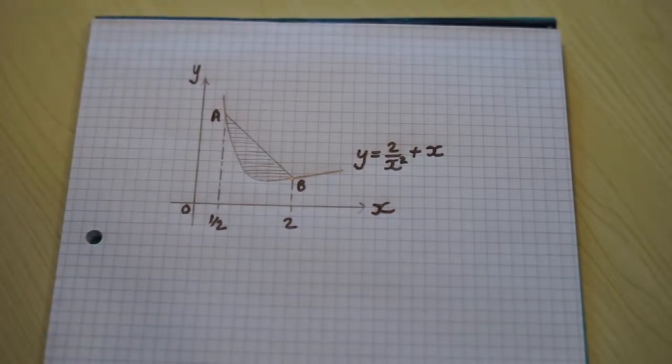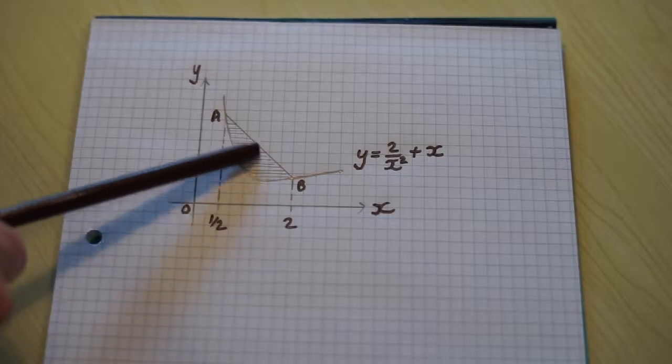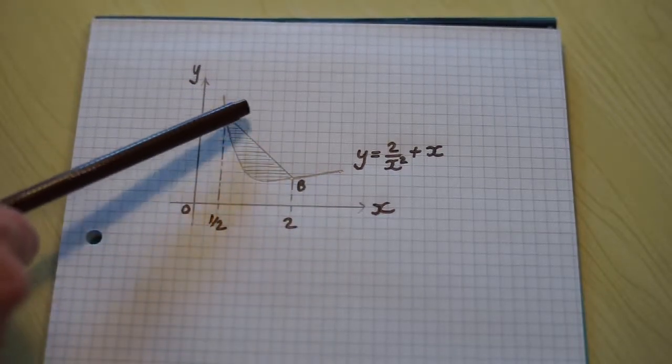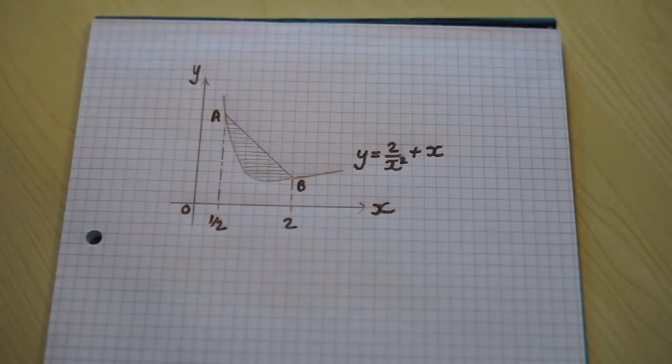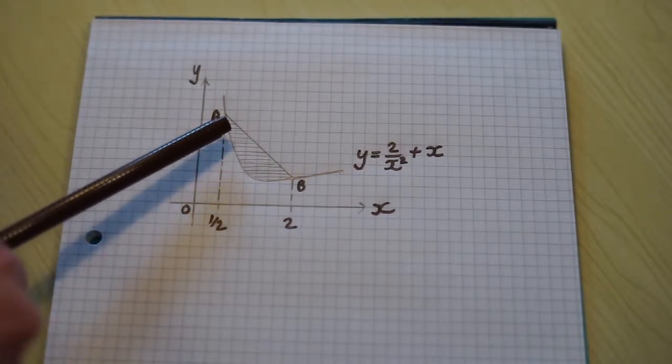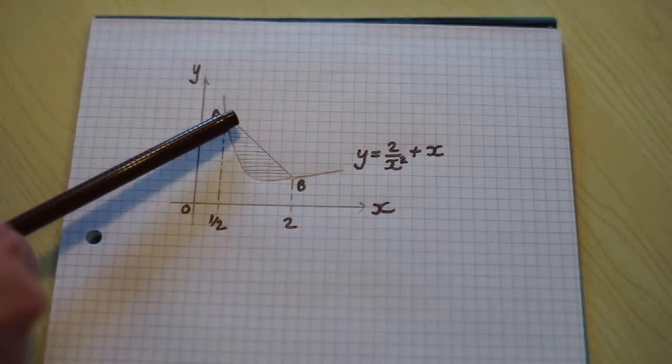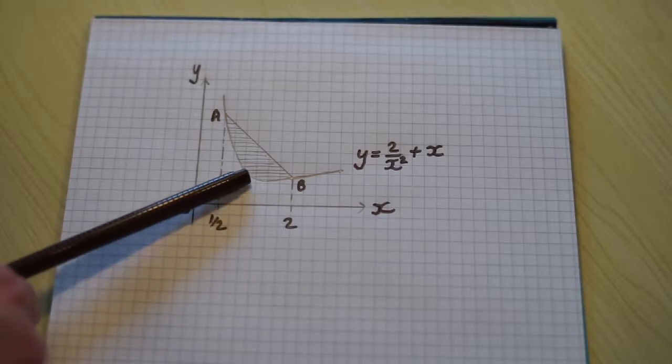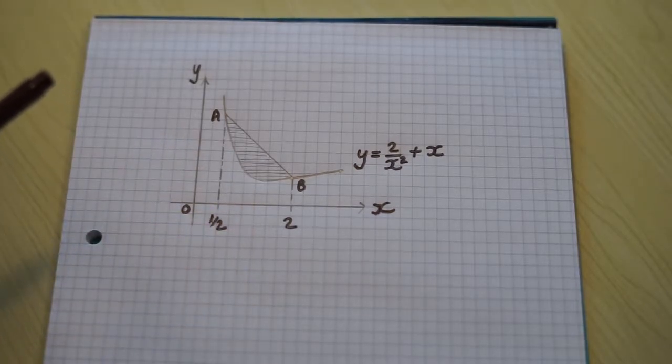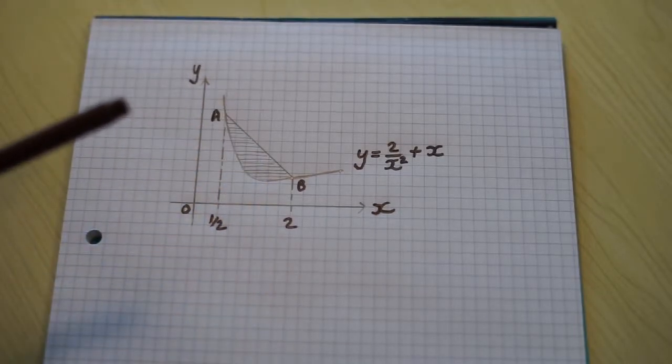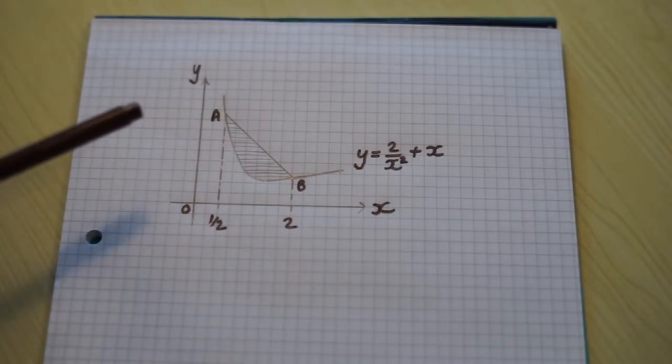So first we need a plan. How can we use our knowledge to deduce what the shaded area is? The shaded area is between the curve and the line. We know that we can use integration to find the area under the curve and above the x-axis, and we know that this area plus the shaded area is a trapezium.